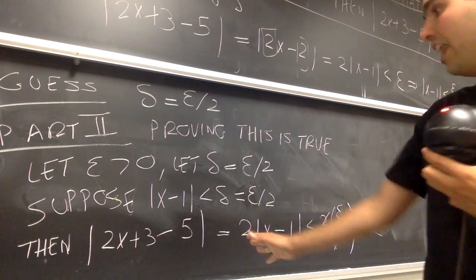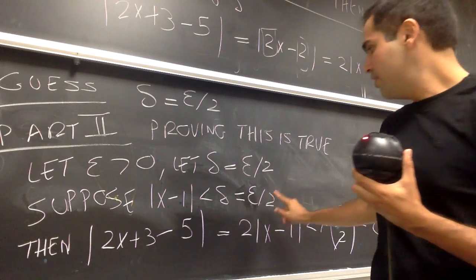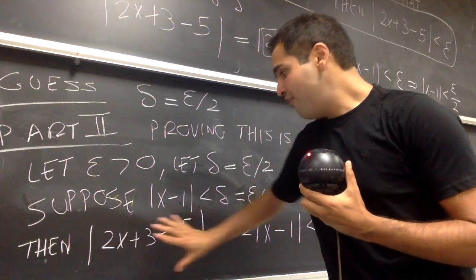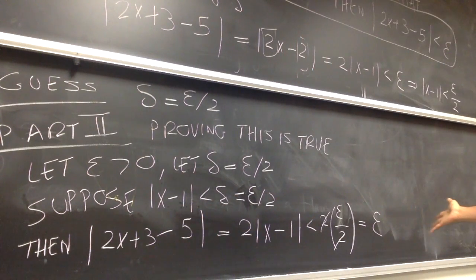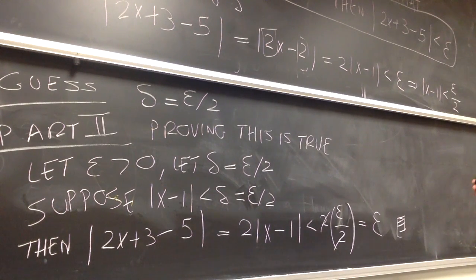So, ultimately, what happens, if you suppose that x minus 1 is close enough, is Epsilon over 2 close enough? Then, f of x minus 5, so 2x plus 3 minus 5 is indeed less than Epsilon. And then, you're done. So, QED. You put this little box to declare victory.